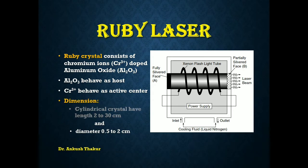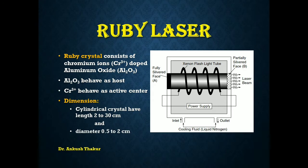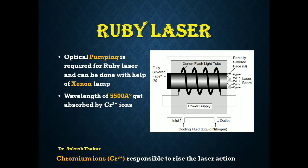If you talk about the dimensions, the cylindrical crystal has a length of 2 to 30 centimeters and a diameter of 0.5 to 2 centimeters. Most importantly, there is a helically wound xenon lamp to produce the optical pumping, and there is an inlet and outlet for liquid nitrogen because during operation a large amount of heat is produced, so we need a flow of liquid nitrogen to keep the system in optimum condition.